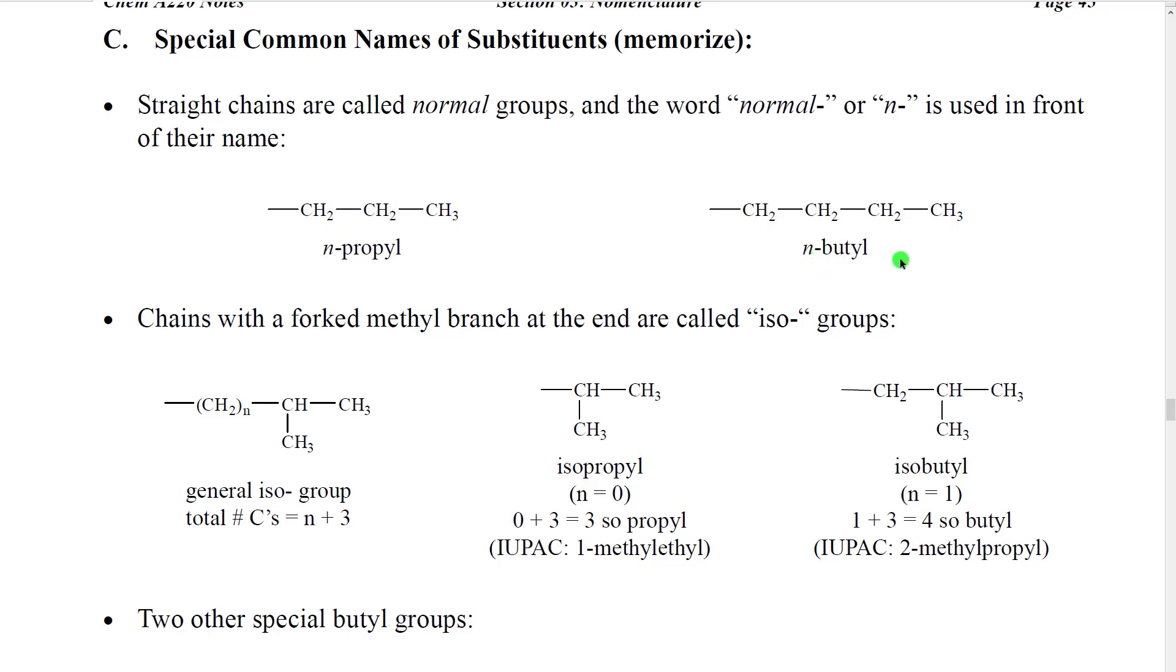Similarly with butyl, normal butyl. Now, what you're going to learn is that organic chemists like to abbreviate things to save space and time, so eventually normal became abbreviated as n. And so, for example, this is n-butyl. N is just an abbreviation for the word normal, and there are people who still use the entire word and call it normal butyl.